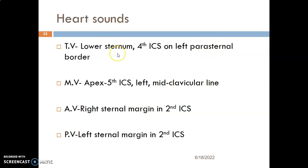As a recap, we say the tricuspid valve — you put your stethoscope at the fourth intercostal space on the left side, parallel to the sternum, at the left parasternal border, fourth intercostal space. While the mitral valve, we auscultate it at the apex, at the left fifth intercostal space at the mid-clavicular line.